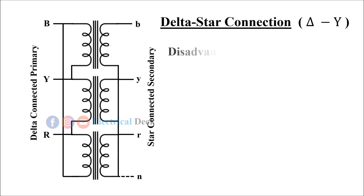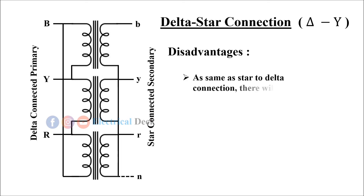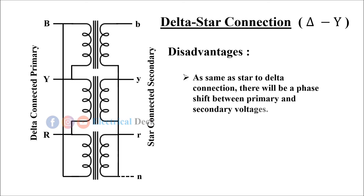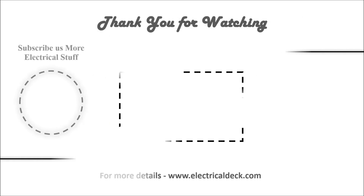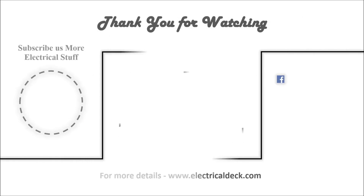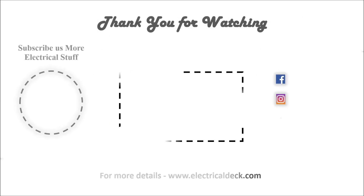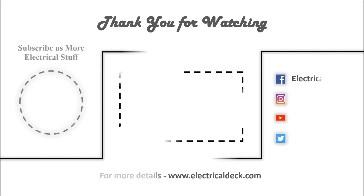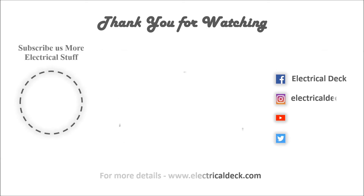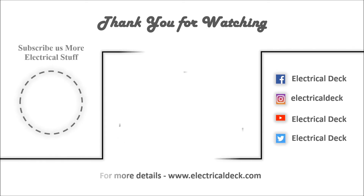But the disadvantage of this type of connection is the same as star-to-delta connection: there will be a phase shift between primary and secondary voltages. Thank you for watching the video. See you soon again, and don't forget to subscribe for more electrical content.